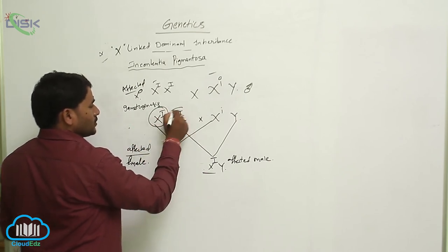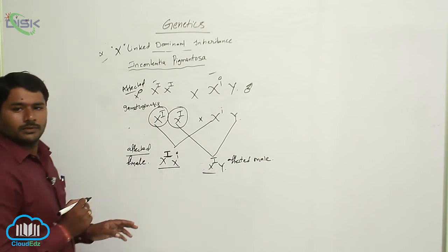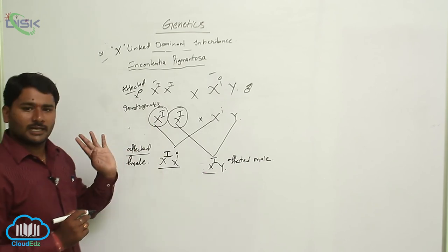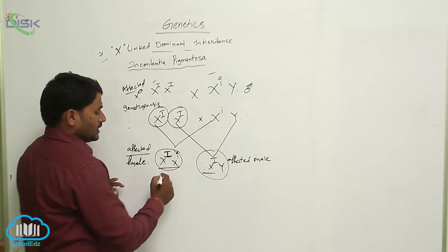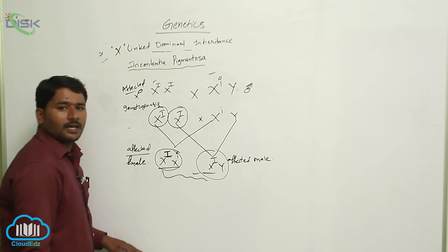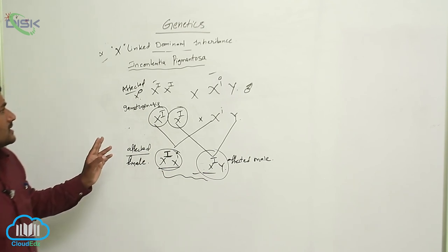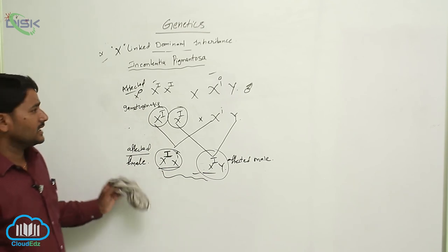The mother is producing two gametes with the dominant allele. One dominant allele will go to the daughter. One dominant allele will go to the son. So all the children are affected in X-linked dominant inheritance.